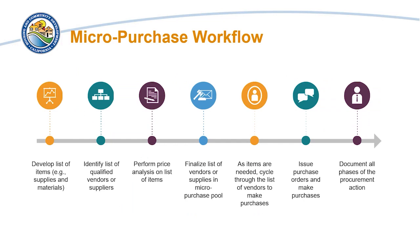The following workflow depicts the timeline of key events for micropurchases. First, develop a list of supplies and materials that need to be procured and identify a list of qualified vendors or suppliers to be used. Next, perform a price analysis on the selected list of items and, based on the results, finalize the list of vendors or suppliers that will become the micropurchase pool for future purchases. As items are needed, cycle through the list of vendors to make purchases and issue purchase orders. Last but not least, document all phases of each procurement action.